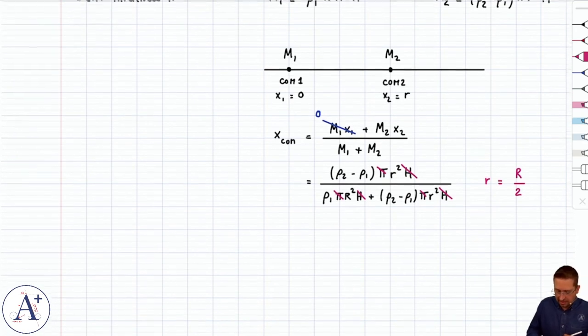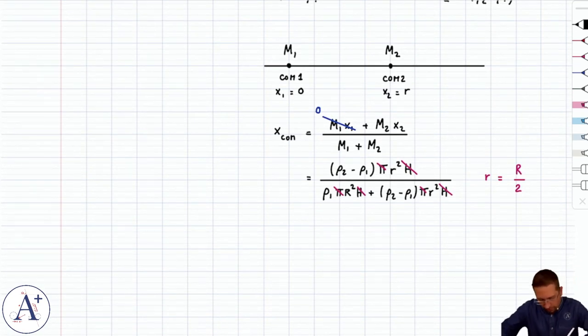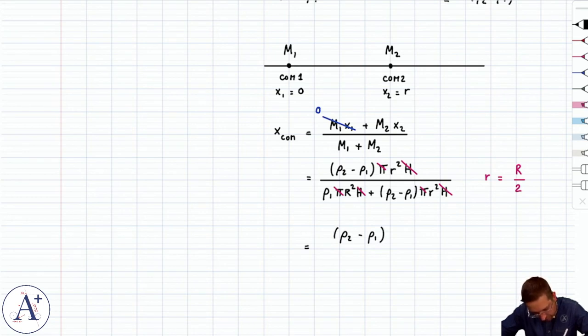All right, now we can clean up a few terms here. Now, the thickness doesn't end up mattering in the calculation, and pi doesn't end up mattering either. And we'll just keep in mind that little r is big R over two, so that ultimately is going to cancel big R squared from this fraction, but let's just go through the steps.